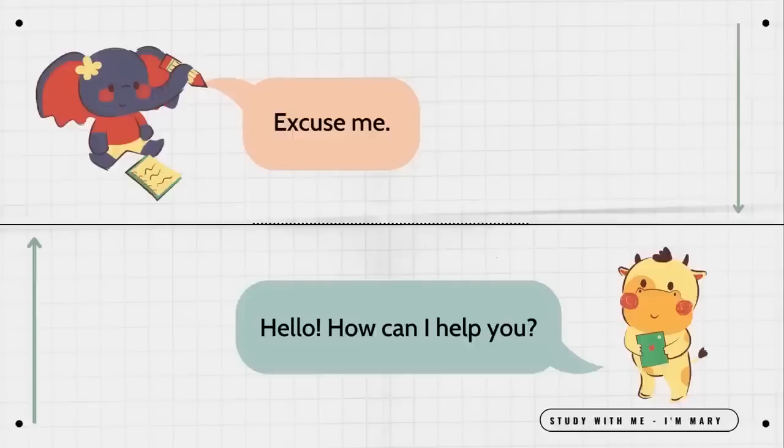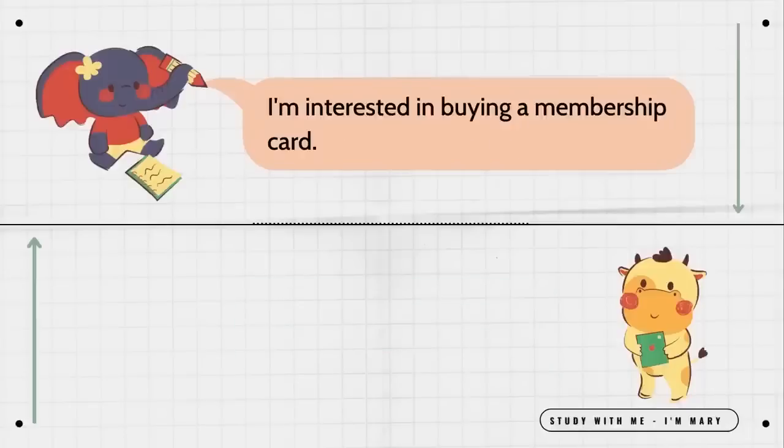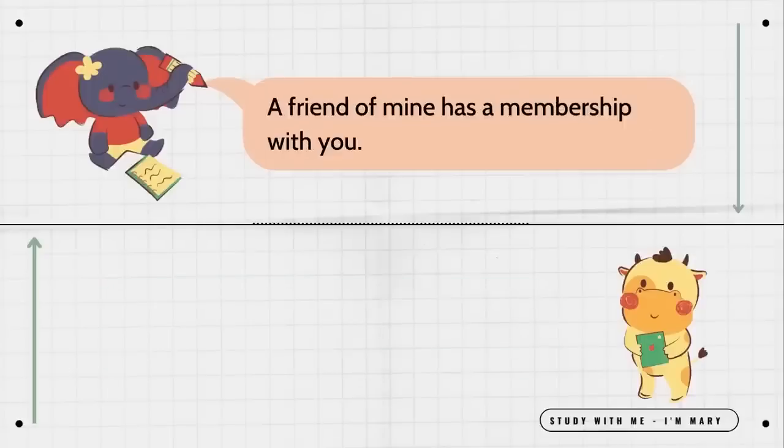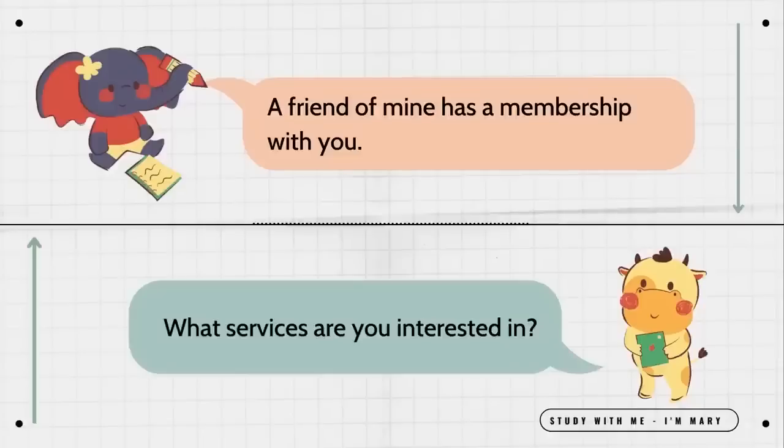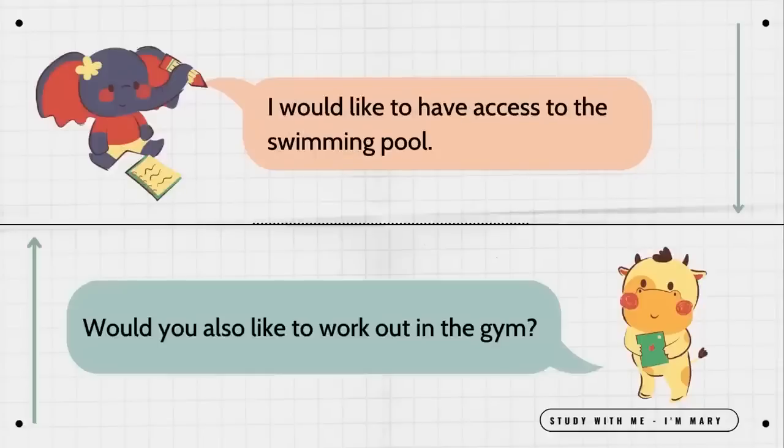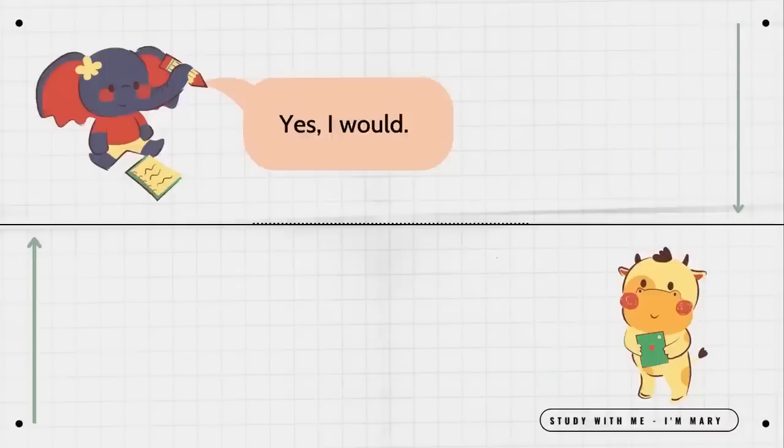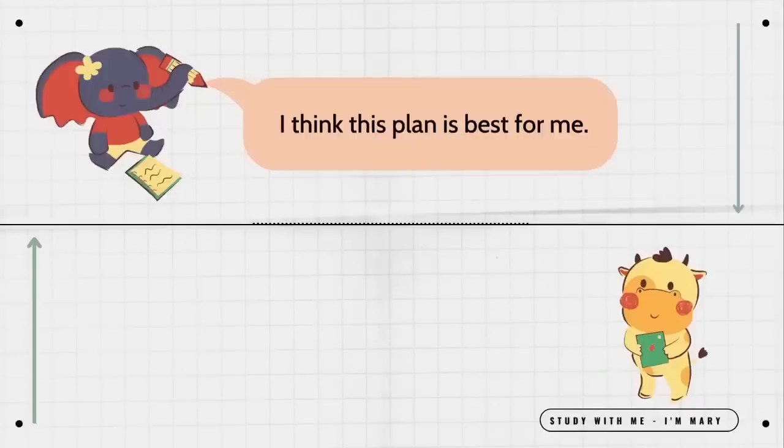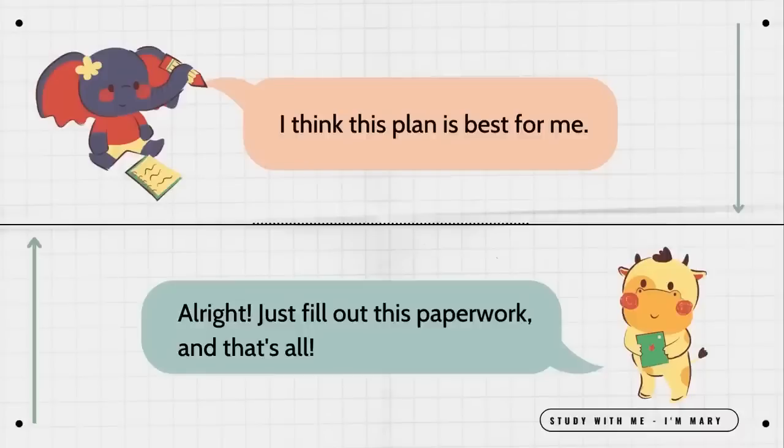Excuse me, hello. How can I help you? I'm interested in buying a membership card. That's great. How did you hear about us? A friend of mine has a membership with you. What services are you interested in? I would like to have access to the swimming pool. Would you also like to work out in the gym? Yes, I would. Here is a listing of our prices. I think this plan is best for me. All right, just fill out this paperwork and that's all.